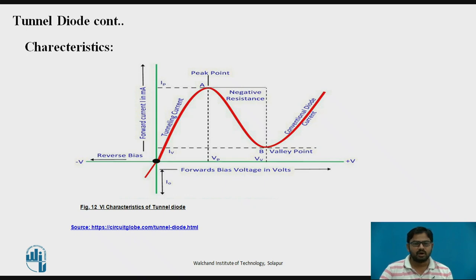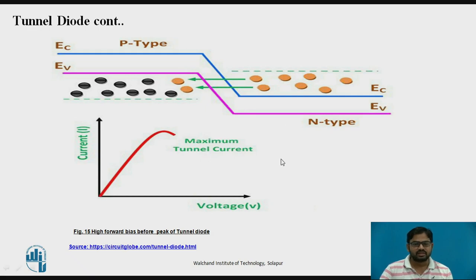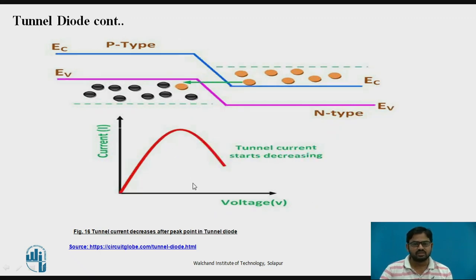In the Tunnel Diode characteristics, the current initially increases due to tunneling current. Small tunneling current flows because of the overlap of the valence band and the conduction band in the N-type region under small forward bias. As bias increases, the current reaches a maximum saturation point. Further increase in bias causes a decrease in tunnel current, producing a negative resistance region. This characteristic differs from a normal PN junction diode.